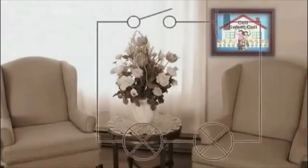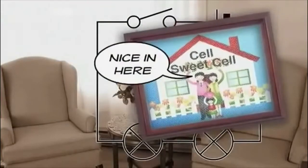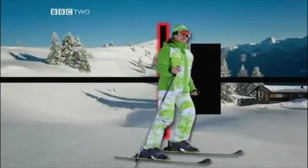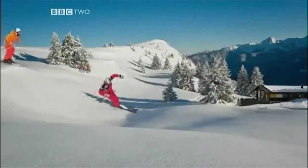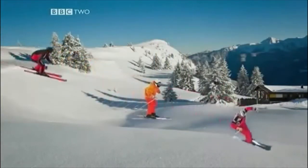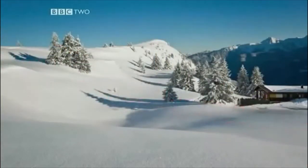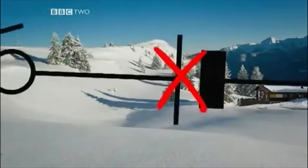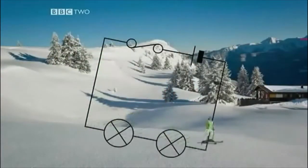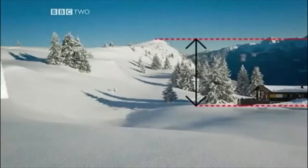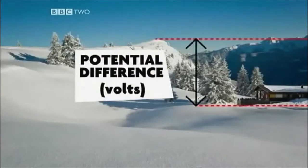But why does current flow? Why bother setting out from that cell in the first place? The electric charge wants to get from one end of the cell to the other. For electrons, this is like going downhill. So they have to go round the circuit. The difference between the ends of the cell is called the potential difference, and it's measured in volts.